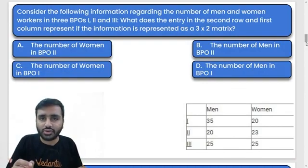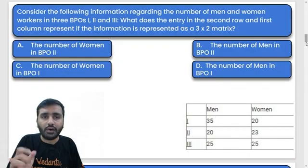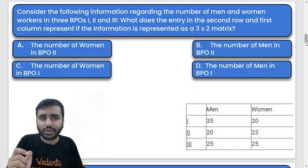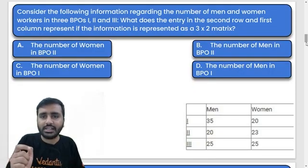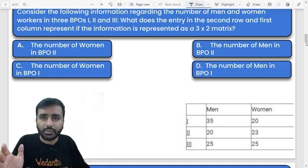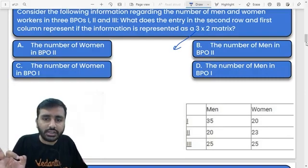Consider the following information regarding the number of men and women workers in the BPO — let's say 1, 2, and 3. What does the entry in the second row and the first column represent if the information is represented as a 3×2 matrix? 3×2 means — very simple — number of rows equals 3, number of columns equals 2.